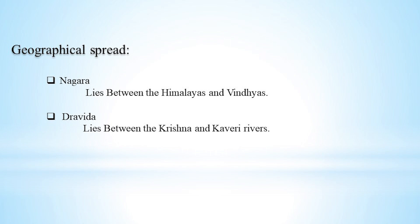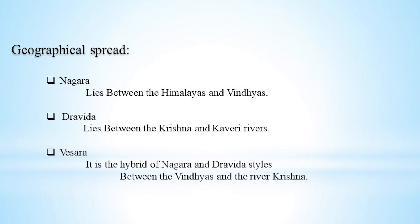Second is Dravida, which lies between the Krishna and Cauvery rivers. Third, Veshara type temples emerged as a hybrid of Nagara and Dravida style, and lie between the river Krishna and Vindhya mountain.